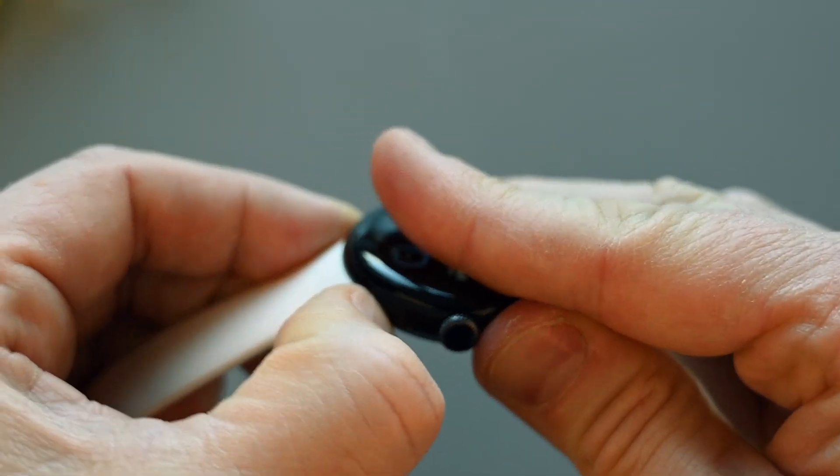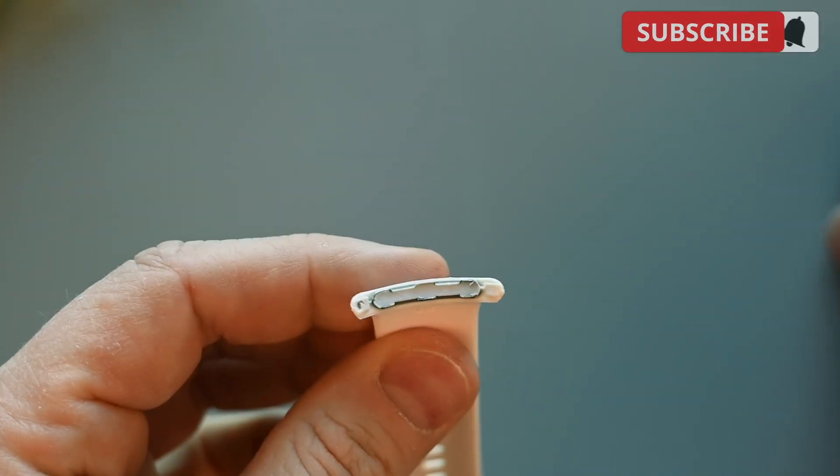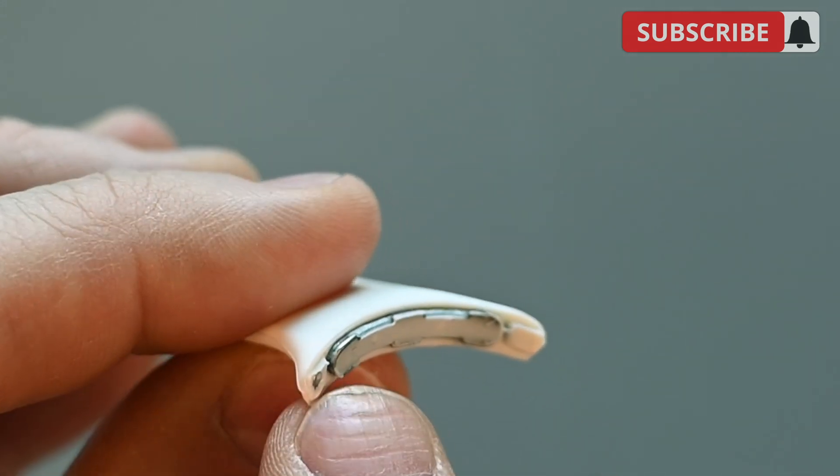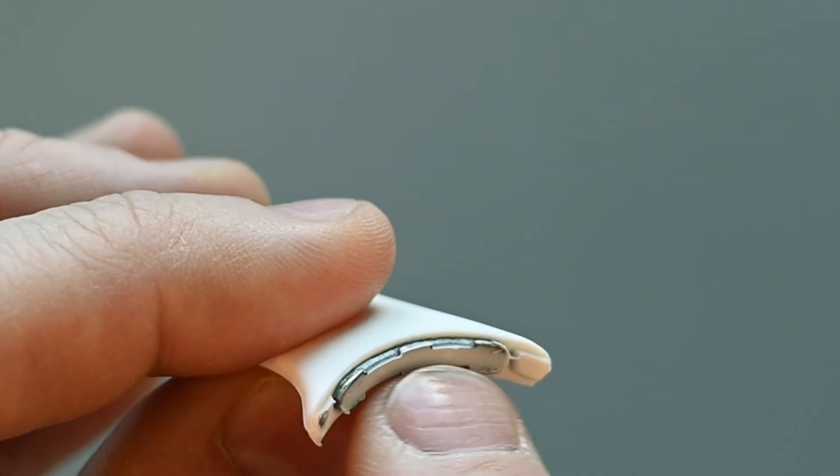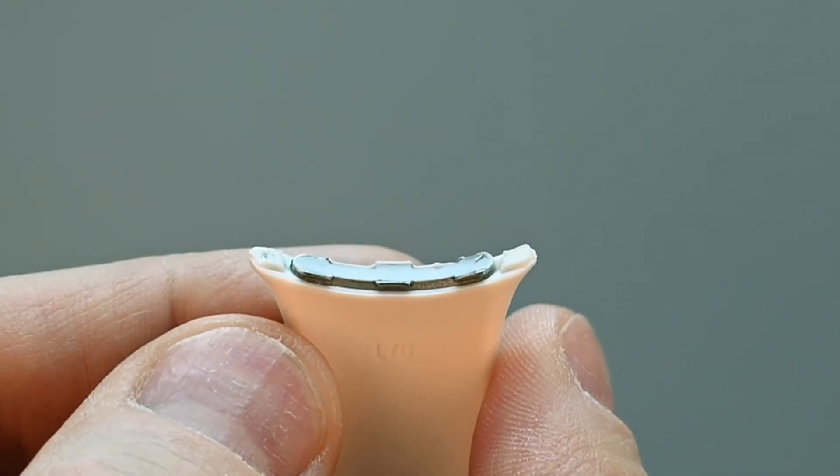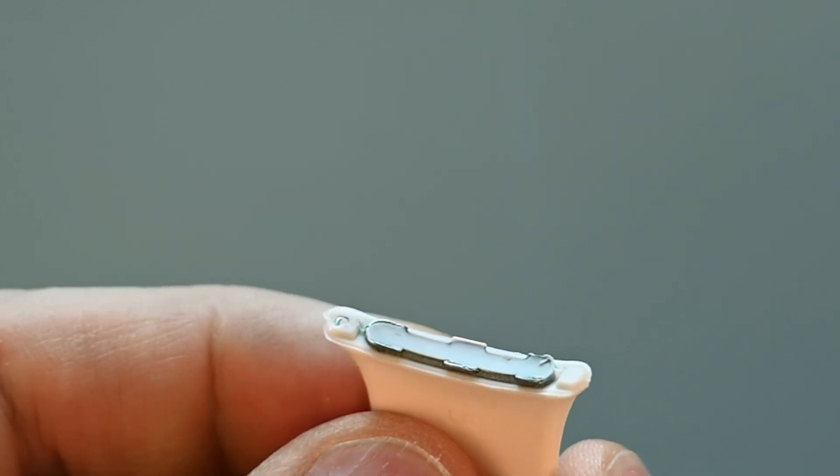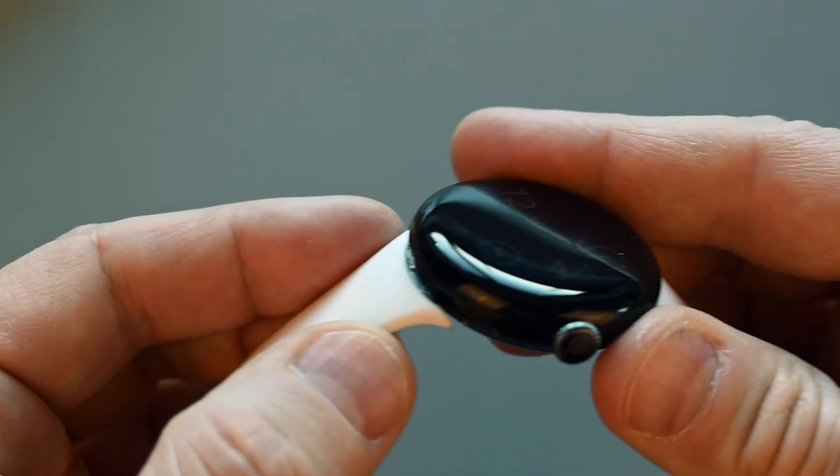If you buy these bands, the first thing you should do is check this part here. On mine, the white silicone you see in the middle here, was also a couple places on the outside of the metal. So the bands got stuck on the watch, and I had to use quite a lot of force, and a few minutes to get them back off. Just make sure they're clean before putting them on the watch.